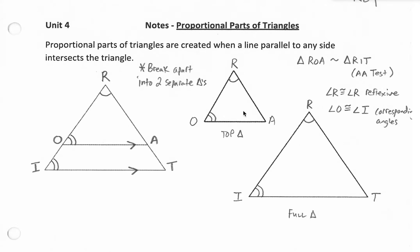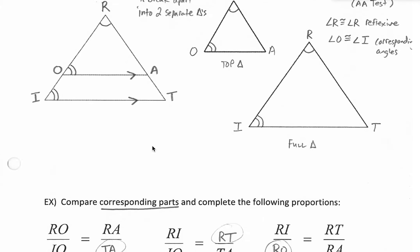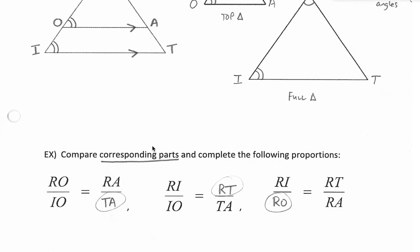So we know that the triangles are similar because of angle similarity and now we can compare their parts as proportional equal ratios.